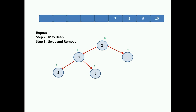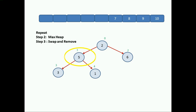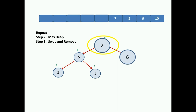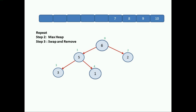Again starting from the last sub-tree: 3, 5, and 1 — parent 3 is smaller, so swap with largest child — 3 and 5 get swapped. The next tree: 2, 5, and 6 — parent 2 is smaller, so it swaps with the greatest child 6; 2 and 6 get swapped. Our tree is now a max heap. Step 3: swap root with last node — 6 and 1 get swapped, and remove the last node at index position 4. We now have 5 elements sorted.